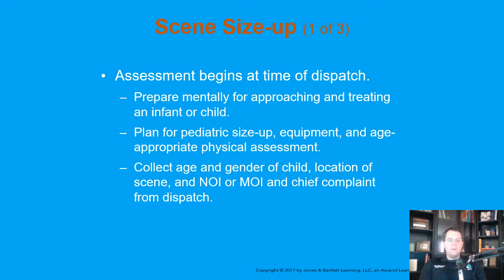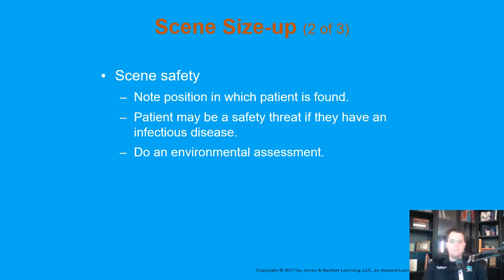When we are collecting information about the patient, you're still going to collect just like you would for an adult — their age, their gender, where's the scene, their nature or mechanism of injury, and their chief complaint. Note the position at which the patient is found. Look for safety threats, especially for infectious diseases. Make sure you're wearing your PPE and do environmental assessments. Know that children lose heat faster and can't maintain their body temperatures as well, so that's something to think about from your initial scene size-up.